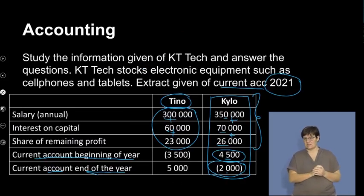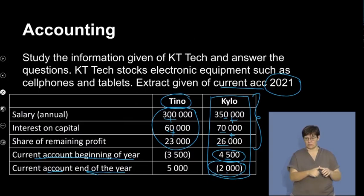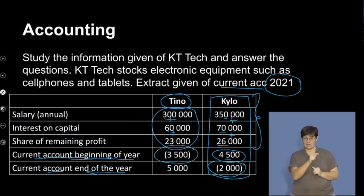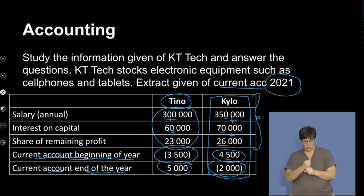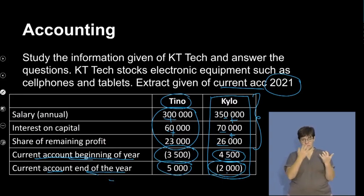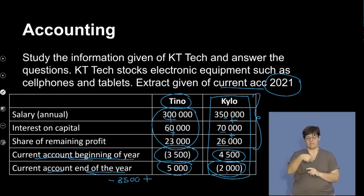Let's go to our table and start off with Tino's current account. Looking at his current account, at the beginning of the year he has a negative balance of 3,500, and at the end of the year a positive 5,000. So my calculation is: negative 3,500 plus 5,000.